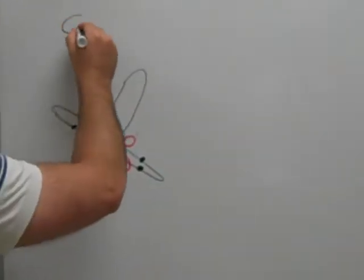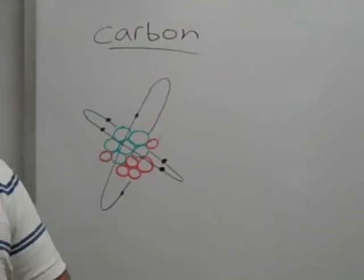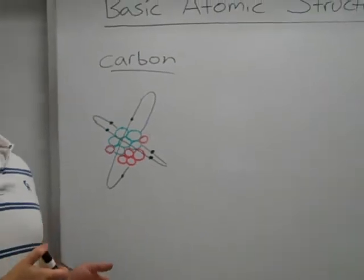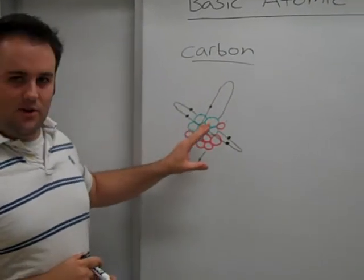This particular atom right here is carbon, and you will see in the next video on the periodic table how to identify this as a carbon atom. But if you look right here, it's color-coded for you.